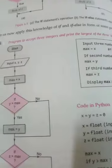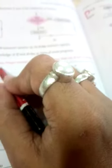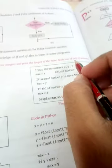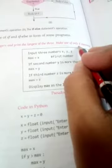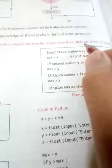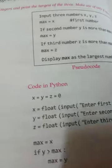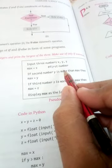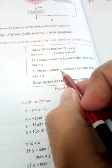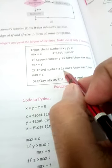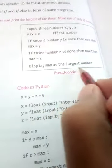This is program number 4.1. The question is: accept three integers and print the largest of the three, using only if statements — no else statement. The pseudo code is: input three numbers X, Y, Z; max equals to X. We store the first value into max and check if Y is more than max; if so, we store Y into max. Then we check if Z is more than max; if so, we store Z into max. Finally we display the max value as the largest number.